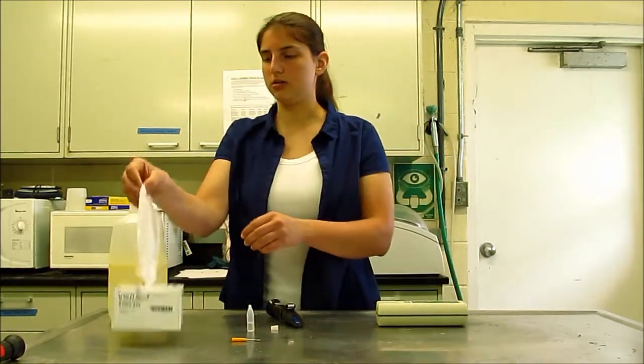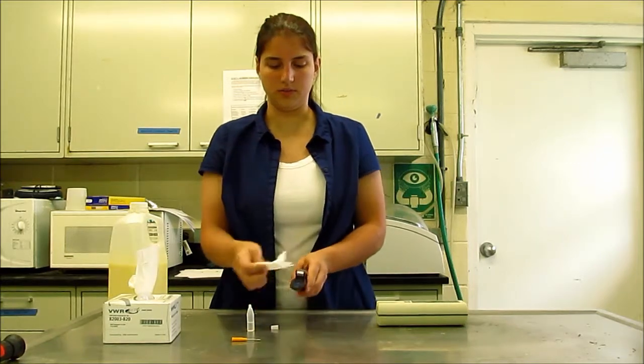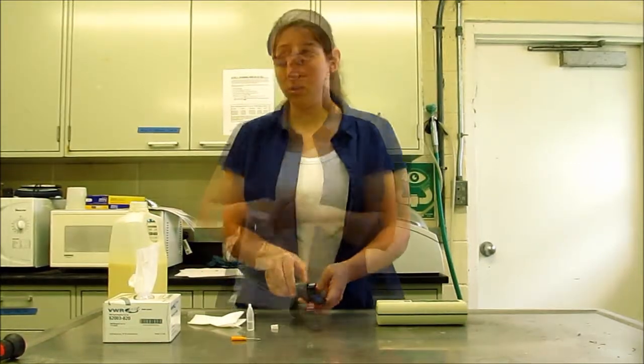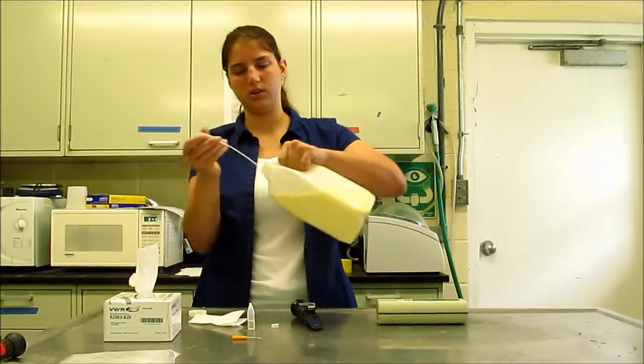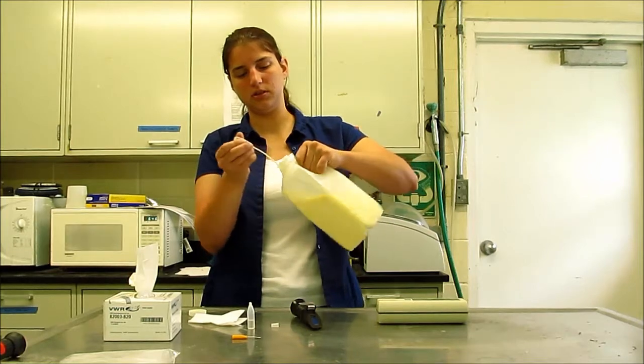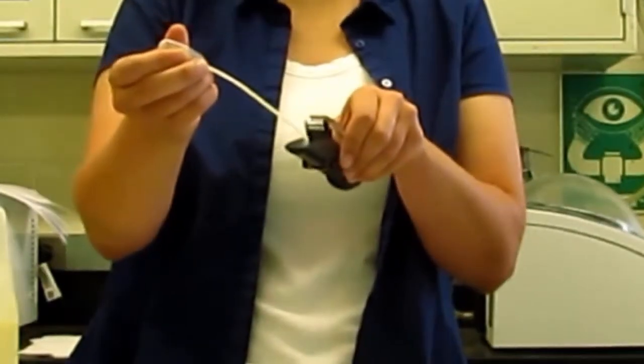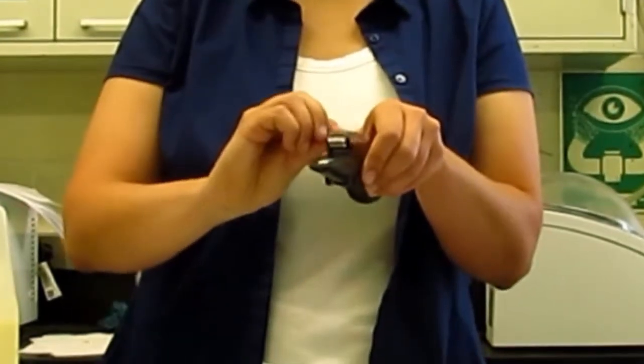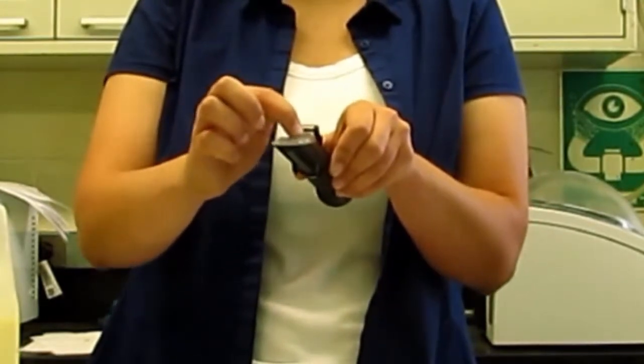To measure an actual colostrum sample, first we'll wipe off the water from our calibration. Then, using a small pipette, we're going to put just a couple drops of the colostrum right on the surface of the refractometer, just like we did with the water, and then flip the cover down to spread it out so that it covers most of that surface.